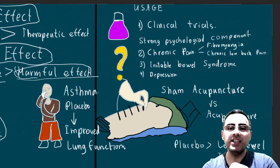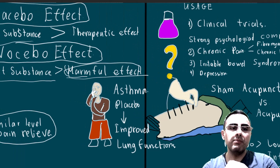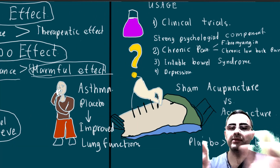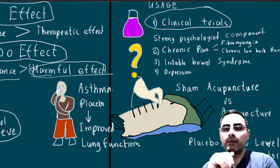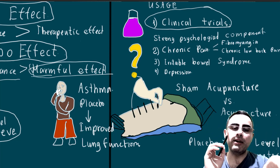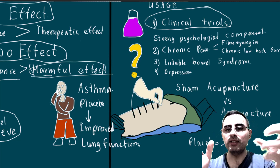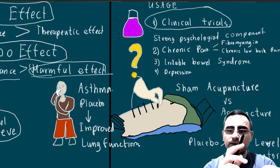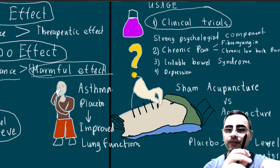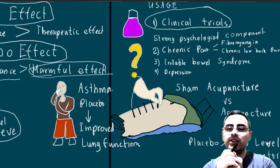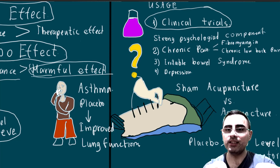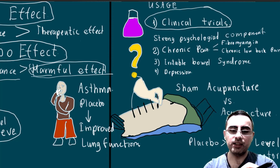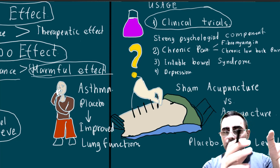The first usage of placebo effect is in clinical trials, where it is widely used. Two groups are formed — one group is given real medicine and another is given placebo — and they are compared. If the medicine is superior to placebo, then that medicine is considered effective, because both groups can have some positive effects due to the placebo effect. If the medicine is not superior to placebo and the difference is not statistically significant, then the medicine is considered a placebo for that disease.